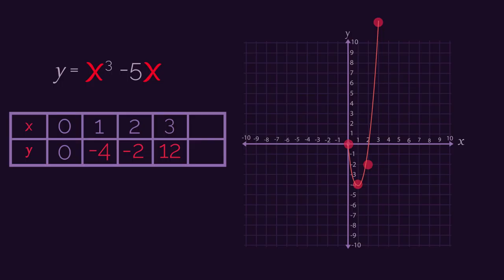The 3, 12 doesn't fit onto our graph, so we'll just ignore it. So we have half our cubic, but as we know what shape we're expecting, we'll have to substitute in some negative x values to find the other half of the curve.